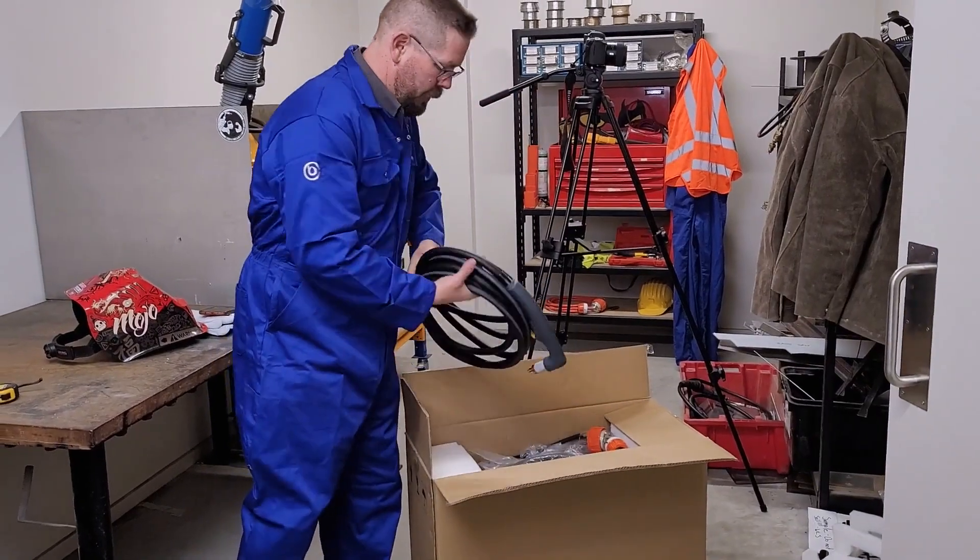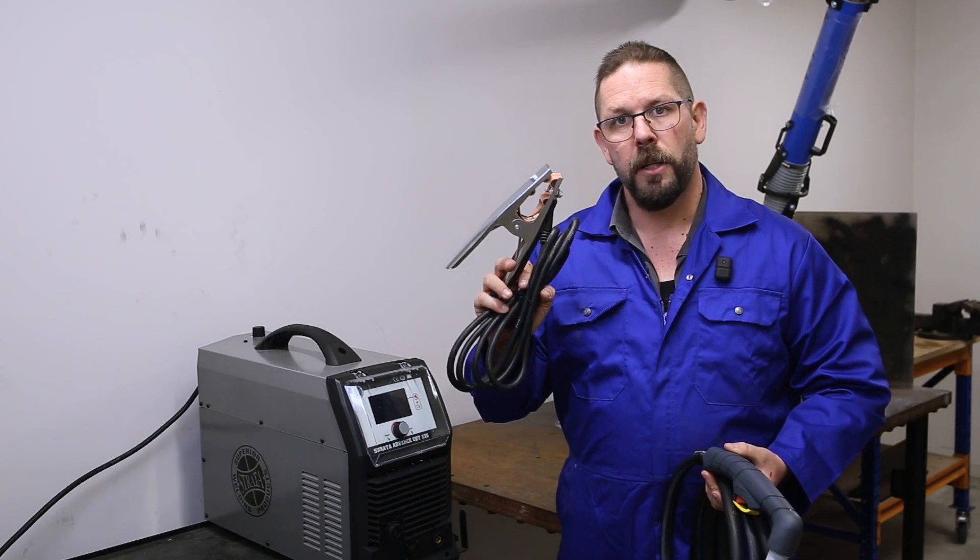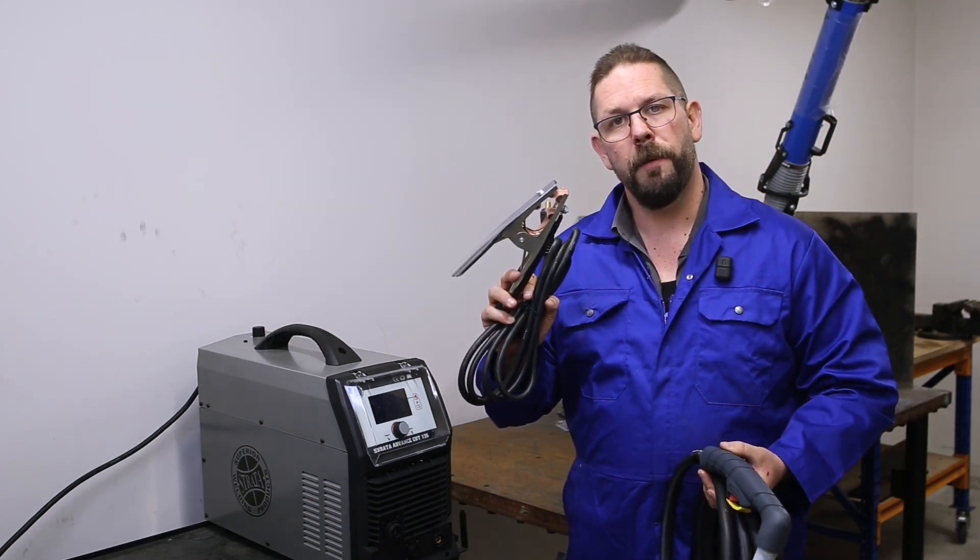Now we're going to have a look at what comes in the box. Earth clamp, only small, doesn't need to be huge, it's only a 125 amp machine.